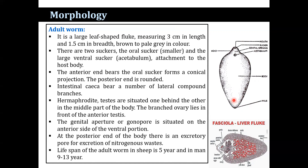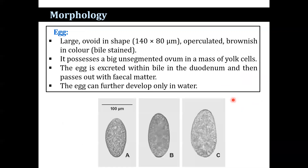The lifespan of the adult worm in sheep varies, whereas in humans it is nine to thirteen years. The eggs are large, oval-shaped, operculated, and brownish in color. Each egg possesses a large unsegmented ovum in a mass of yolk cells. The egg is excreted within bile into the duodenum and then passes out with fecal matter. The eggs can further develop only in water.